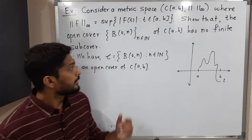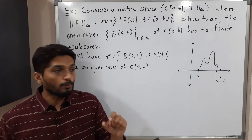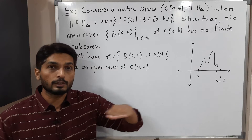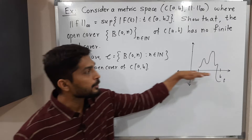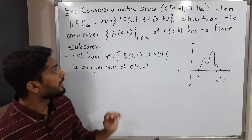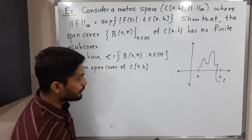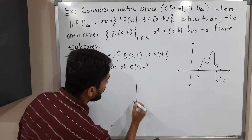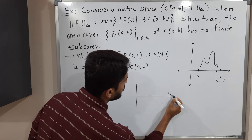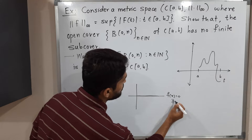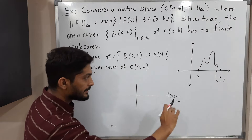Let us understand these balls with center O. Here O is not the origin; O is the zero function, F(x) = 0, which is simply the x-axis. So the center of each ball is the x-axis. For ball B(0, 1), we get a horizontal strip of width 1 above and below the x-axis.